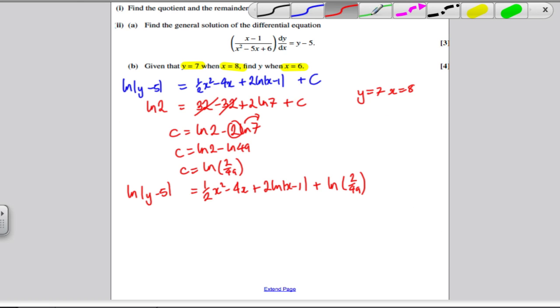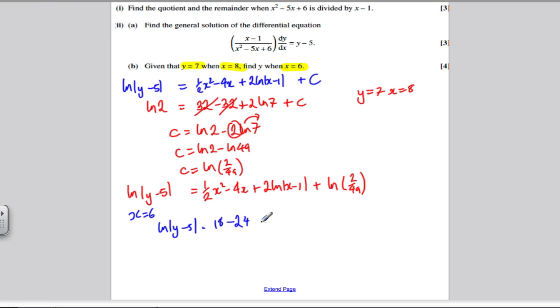So sub in x is 6. I'll use a different color pen now. x equals 6. We get ln of Y minus 5 is equal to. Okay, 6 squared is 36. Half of that is 18. 4 times 6 is 24. So let's subtract 24. Putting in 6 here, you get plus 2 ln 5. And we've got our ln 2 over 49.